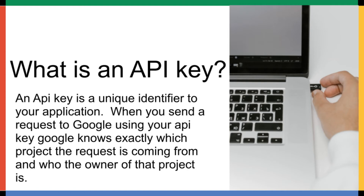API keys are used for several things, the main one being that they identify your application to Google. Being able to track which application is making a request is very important for several reasons. The first being quota — your application is allowed to make a limited number of requests to the API over a period of time. This is your quota allotment, so knowing which application is making the request is the easiest way of tracking how many requests each project has made during a period of time.